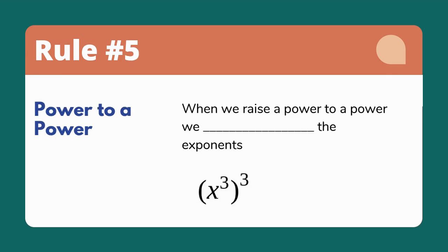Our fifth exponent rule tells us what to do when we raise a power to a power. In this case, we will multiply our exponents. So that means x to the third power raised to the third power becomes x to the ninth power.